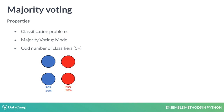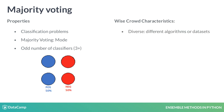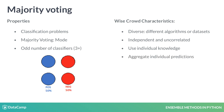There are some characteristics you need in your crowd for a voting ensemble to be effective. First, the ensemble needs to be diverse — you can do this by using different algorithms or different datasets. Second, each prediction needs to be independent and non-correlated from the rest. Third, each model should be able to make its own prediction without relying on the other predictions. Finally, the ensemble model should aggregate individual predictions into a collective one.